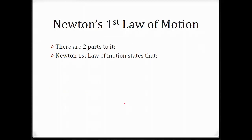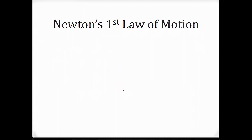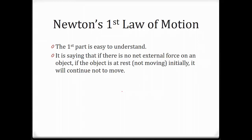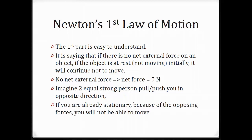There are two parts to Newton's first law. It states that unless acted upon by an external force, an object at rest will remain at rest, and an object in motion will remain in motion at the same speed and direction. The first part is easy to understand: if there's no net external force on the object, and the object is at rest or not moving initially, it will simply continue not to move. Imagine two equally strong persons pushing or pulling you in opposite directions — net force equals 0 — and if you're already stationary, the opposing forces mean you will not be able to move.